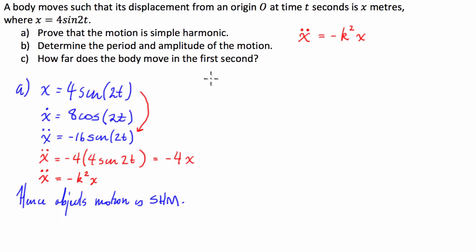So, determine the period and amplitude of the motion. To do this, let's work out the period first. Now, another equation that we're going to have to know to work out period is, period is equal to 2 pi on k.